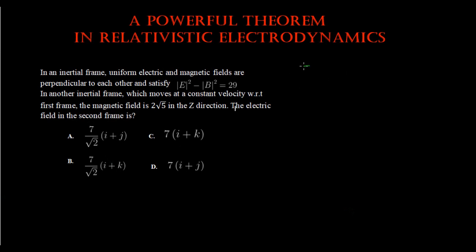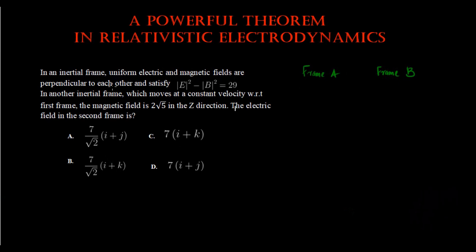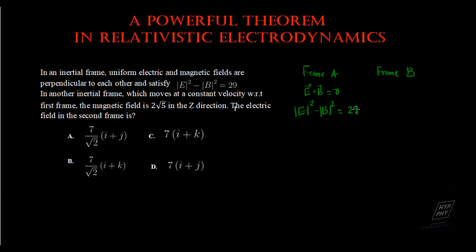We have to find the electric field in the second frame. We have two frames here: frame A and frame B. For frame A, it is said that the electric and magnetic fields are perpendicular to each other, so E dot B equals zero. And in the same frame, E and B satisfy the relation: modulus of E squared minus modulus of B squared equals 29.